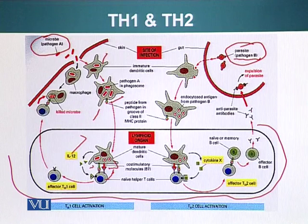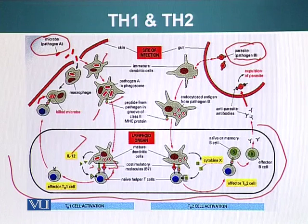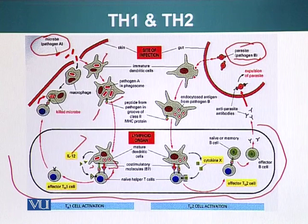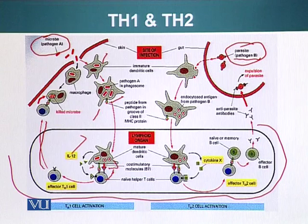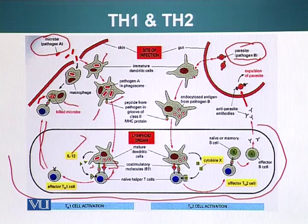Additionally, this dendritic cell is producing interleukin-12 to guide our helper T cell in the direction of helper T cell type 1. This interleukin-12 will cause the helper T cell to become an effector helper T cell type 1. Helper T cell type 1 will migrate to the site of infection and stimulate macrophages by producing different types of signaling molecules, making them more efficient killers, which allows macrophages to destroy the pathogen in their phagosome.